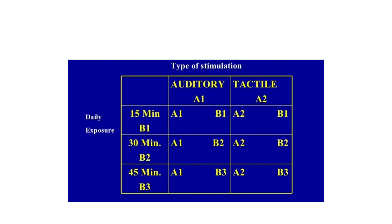The type of stimulation is considered as factor A and the duration of stimulation is considered as factor B. Factor A — type of stimulation — has two levels: A1 is auditory and A2 is tactile stimulation. Factor B — daily exposure — has three levels: B1 is 15 minutes, B2 is 30 minutes, and B3 is 45 minutes.